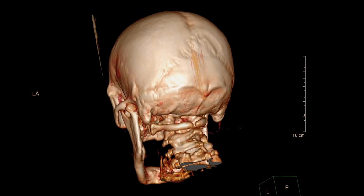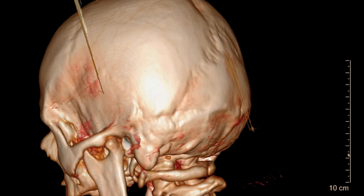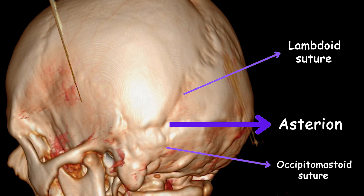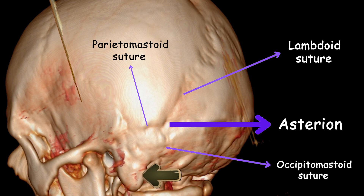There is a specific anatomical point on the lateral side of the skull called the asterion, which is visible in this image. It is located at the intersection of three sutures: the lambdoid suture, the occipitomastoid suture, and the parietomastoid suture. The asterion is formed by the meeting point of the lambdoid suture, which separates the occipital bone from the parietal bones, and the occipitomastoid and parietomastoid sutures, which separate the occipital and temporal bones from the parietal bone, respectively. The asterion is positioned just above the mastoid process, a prominent bony projection on the temporal bone behind the ear.